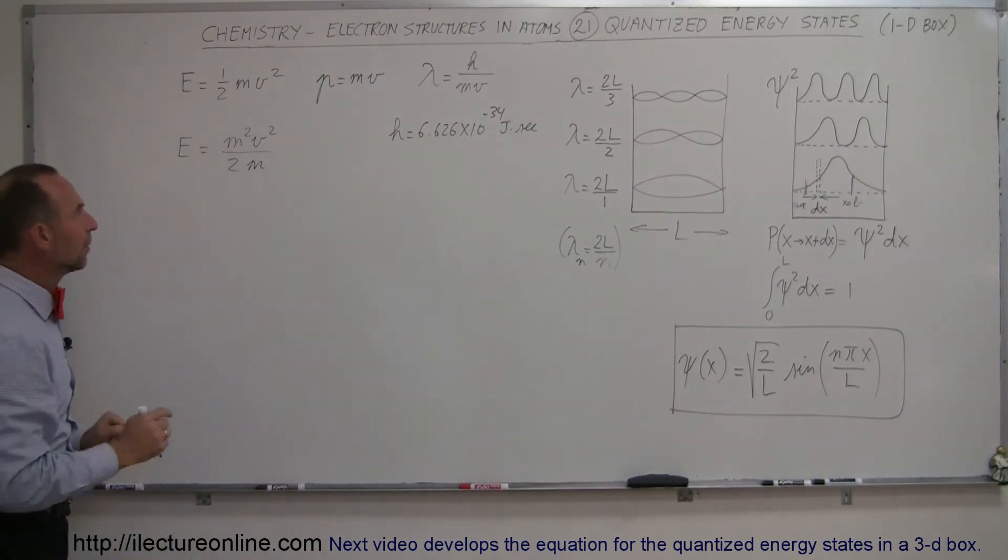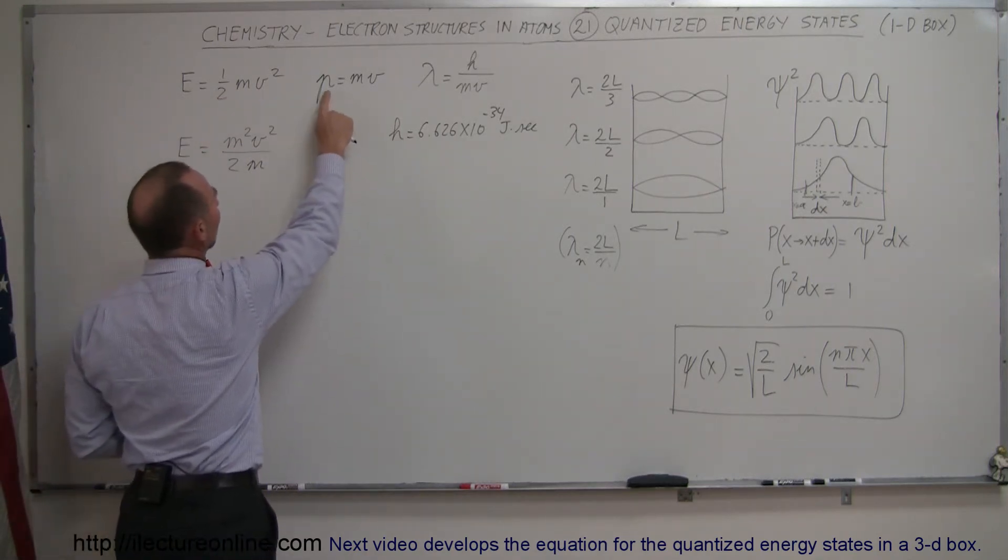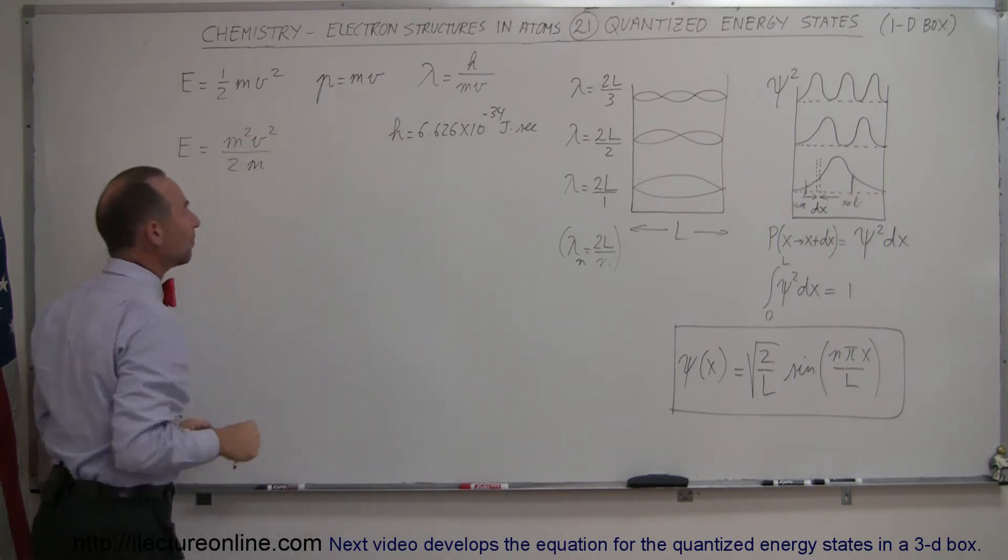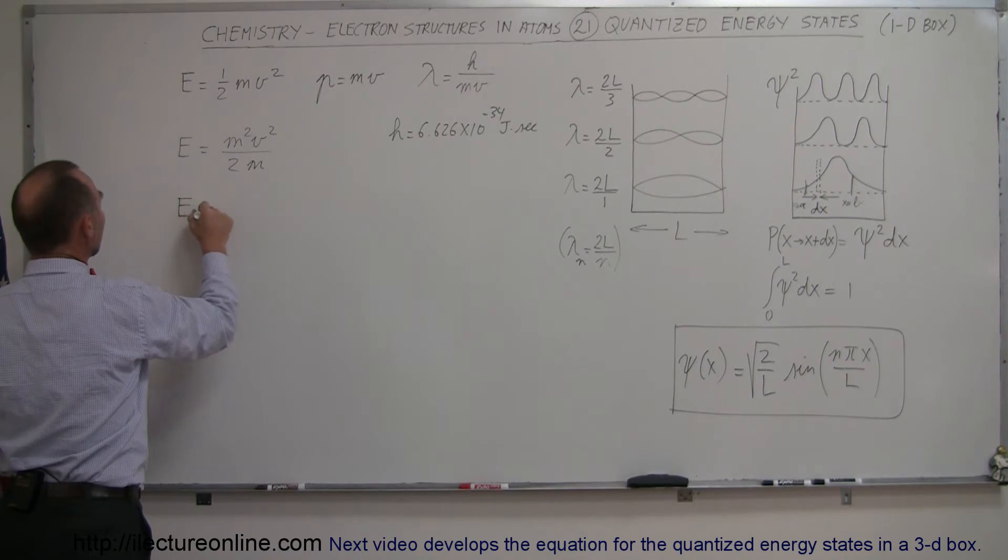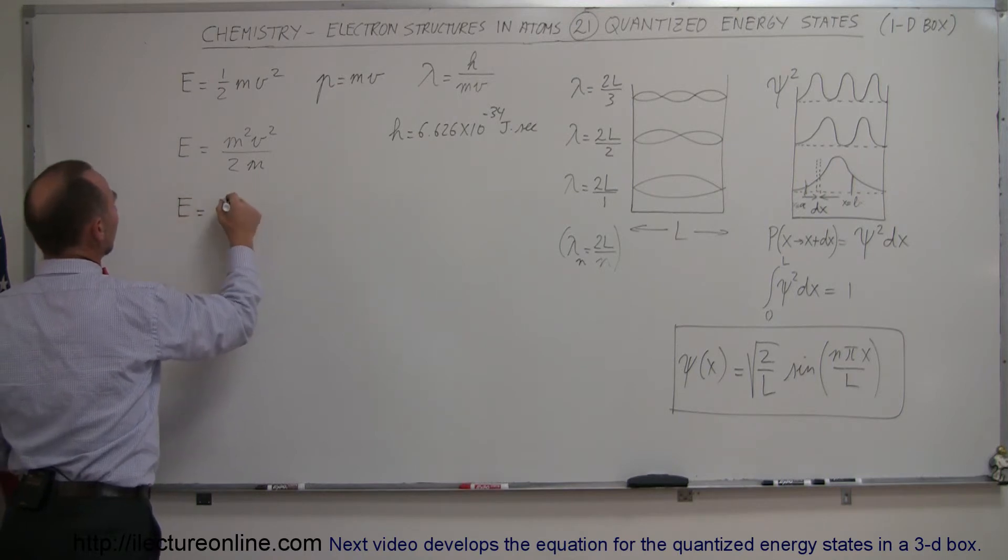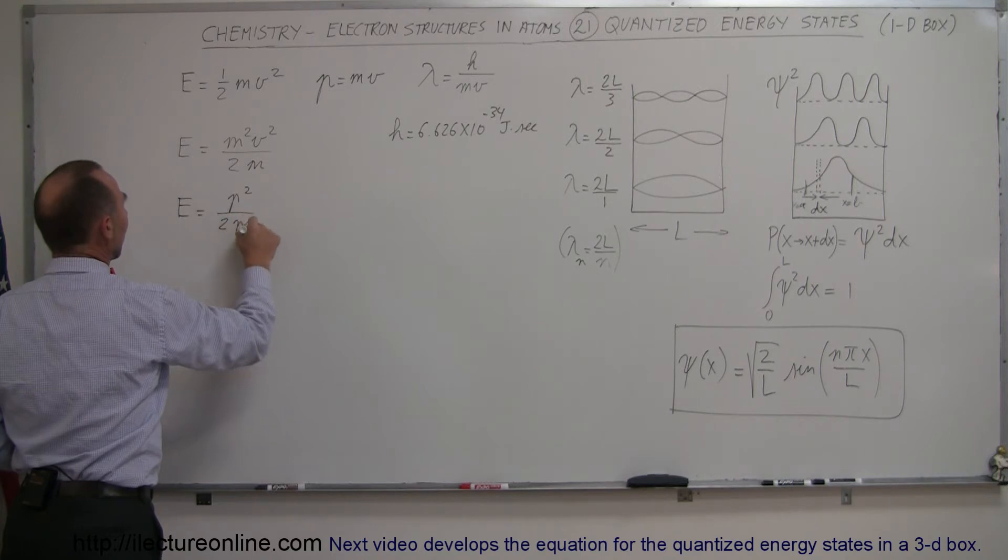Now, I did that for a reason, because notice that the definition of momentum is mass times velocity, so this is basically momentum squared divided by twice the mass of the particle. So the energy of a particle is equal to the momentum squared divided by twice the mass.